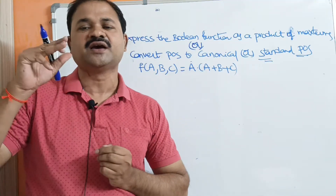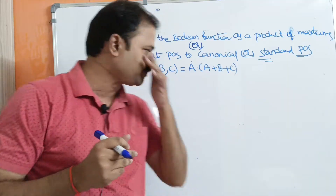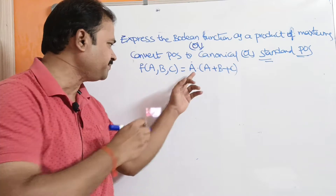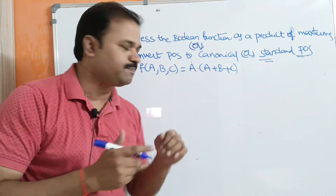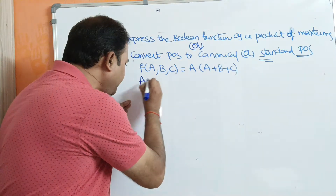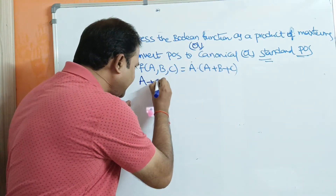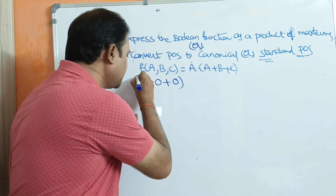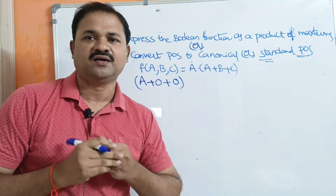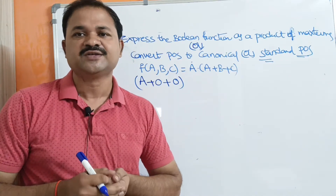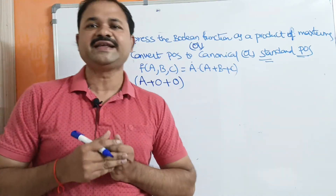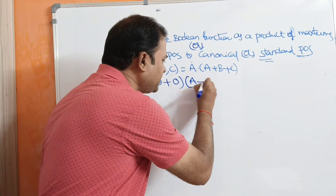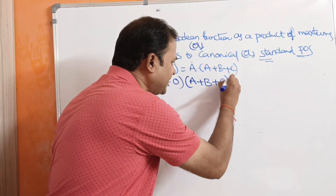Max term means OR operation is performed on the variables. This is the expression which is given. If we consider the first term, variables b and c are missing. If we consider the second term, all the variables are present, so there is no need to add anything.